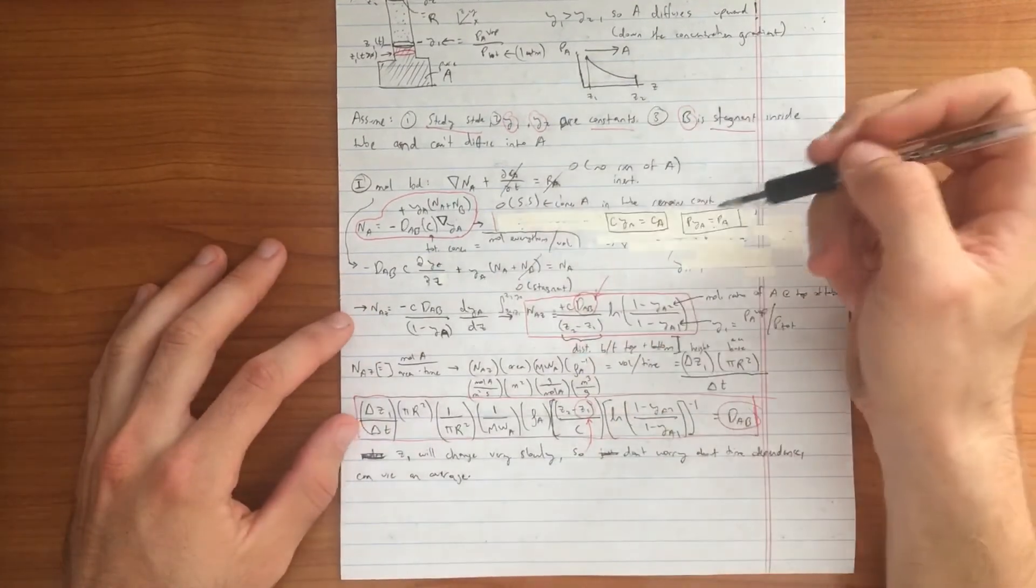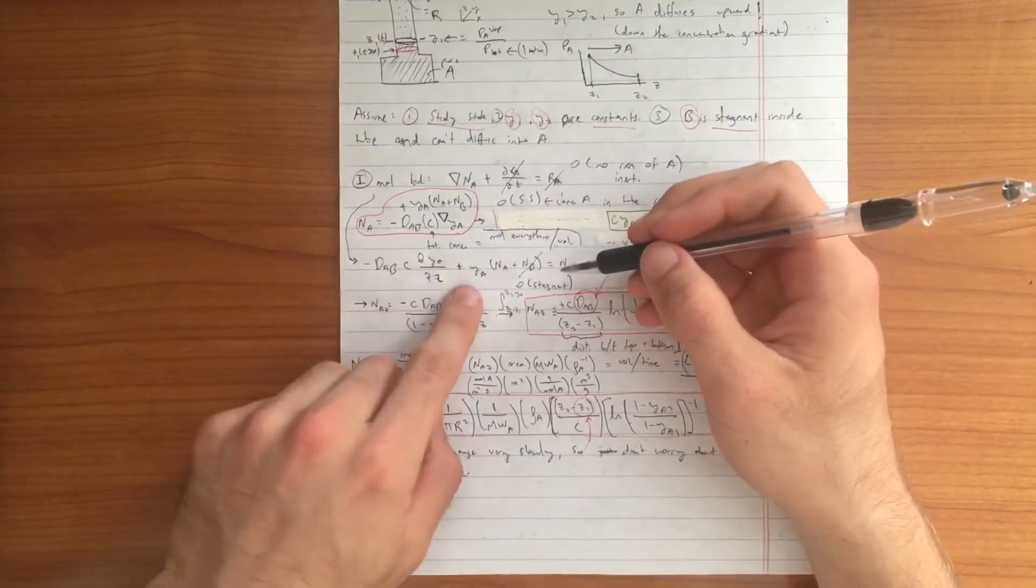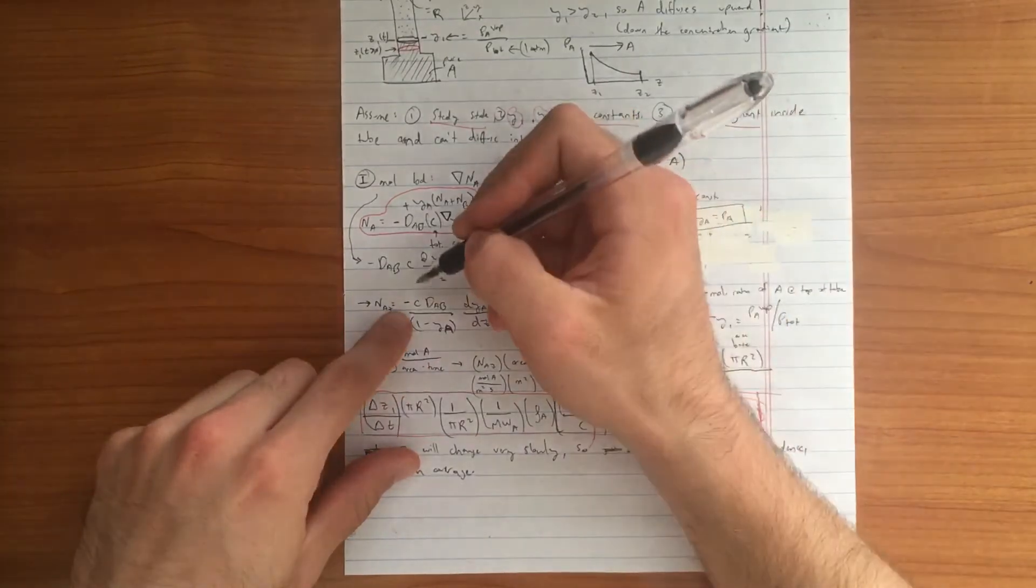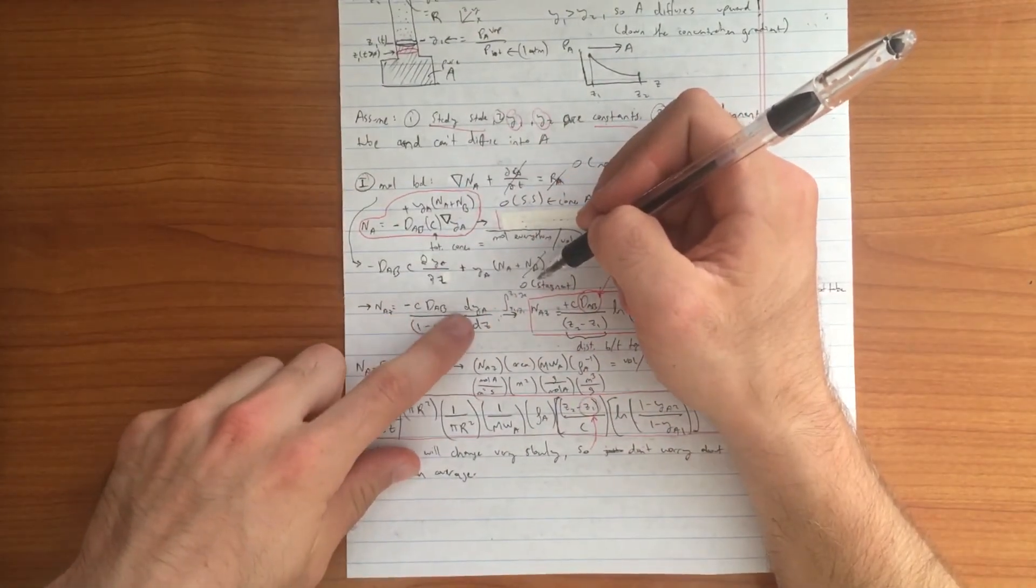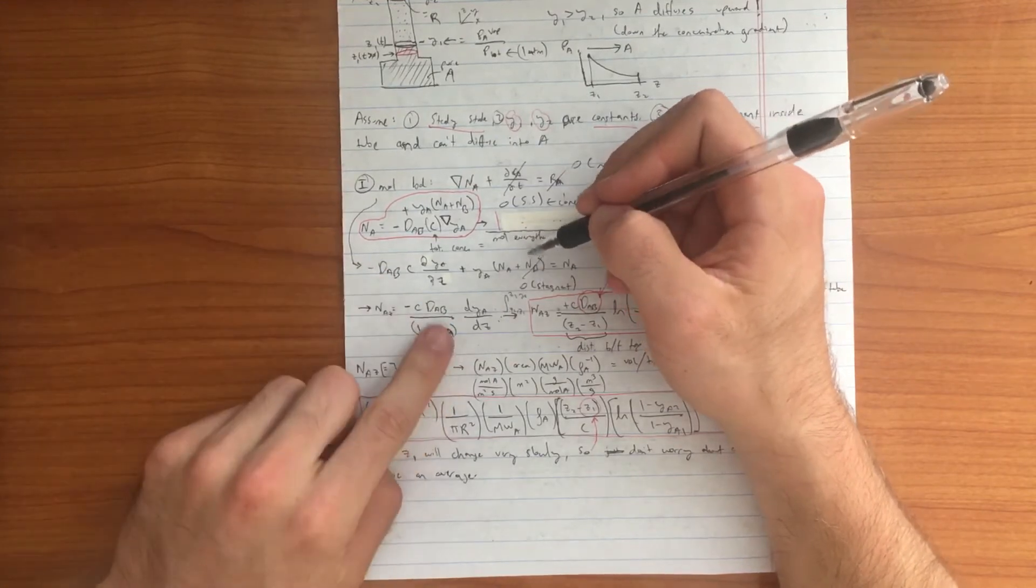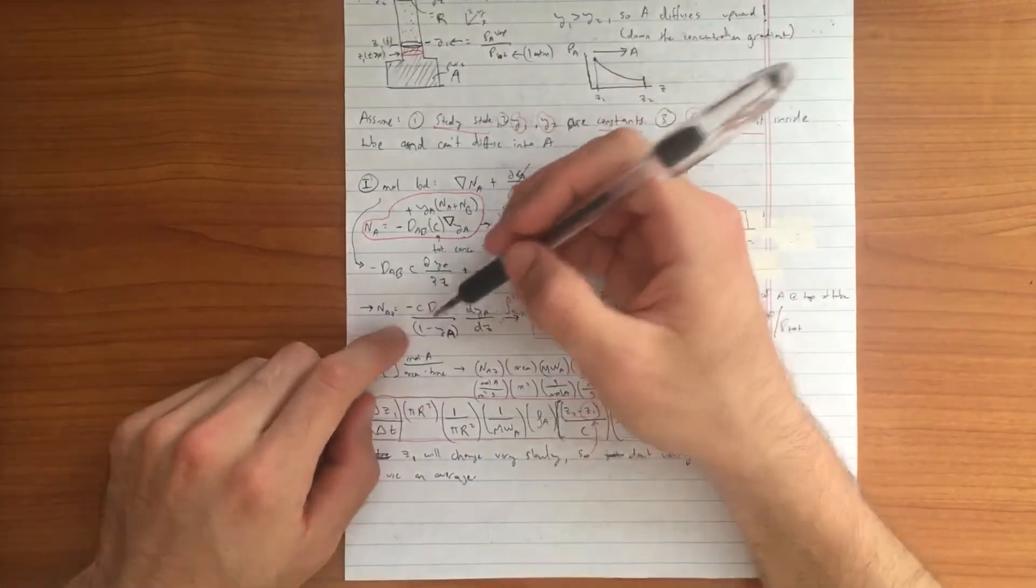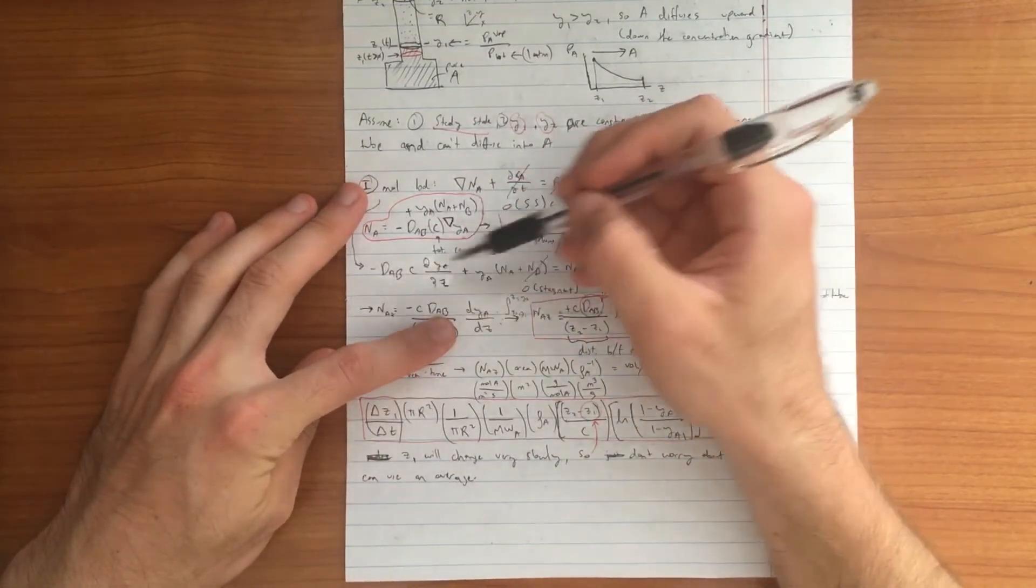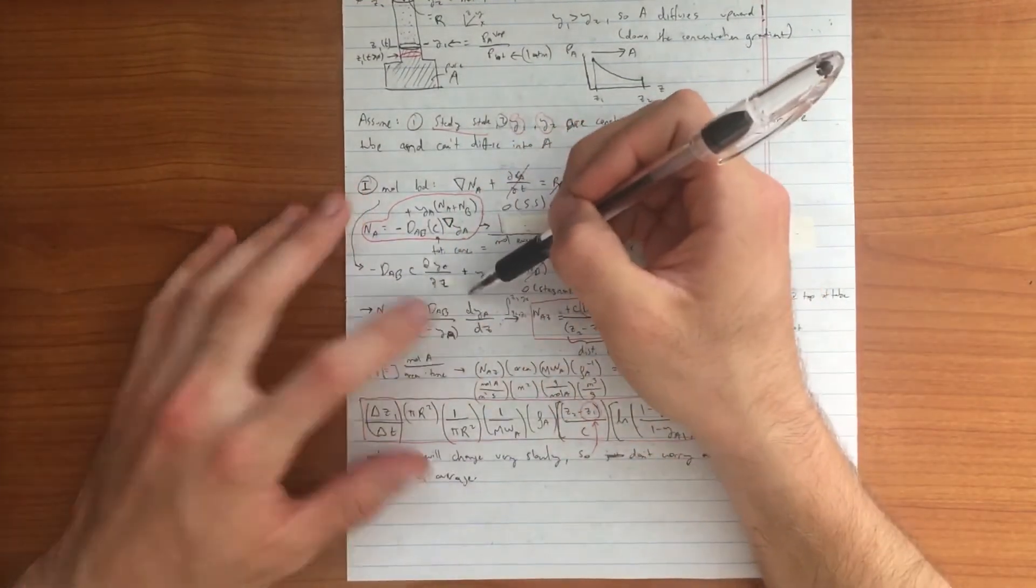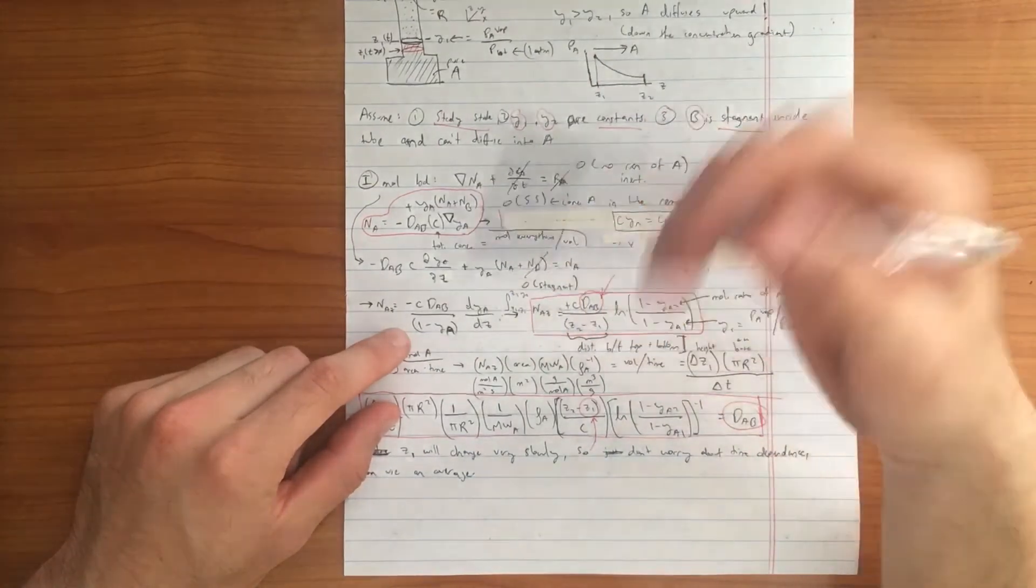Moving from this step to this step is just algebra. We subtract NAY on both sides. That's where this 1 minus YA comes from. We have minus C DAB dYA/dZ. In examples in mass transport, when you do not have convective terms that are important, we can usually neglect this part. When you see C DAB dYA/dZ, this is a pretty common form you see, but we cannot neglect convective forces in Arnold cells because it's playing a role in the diffusion.